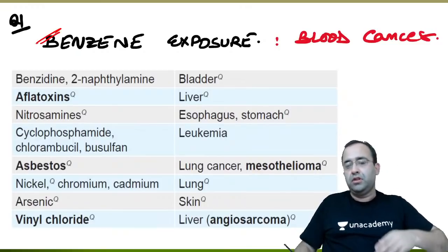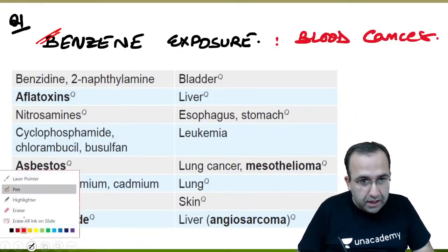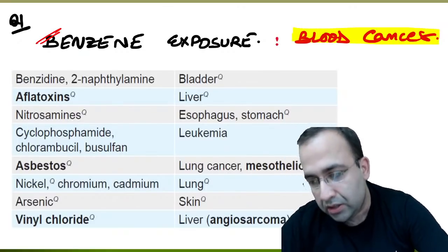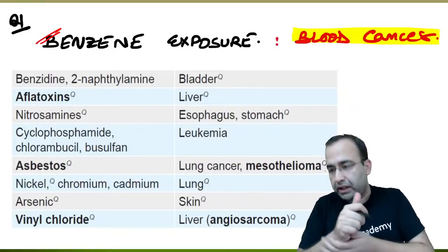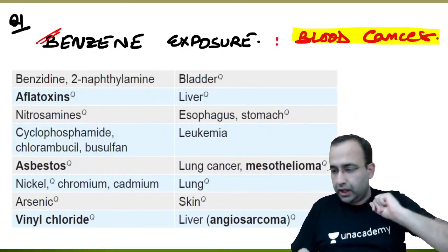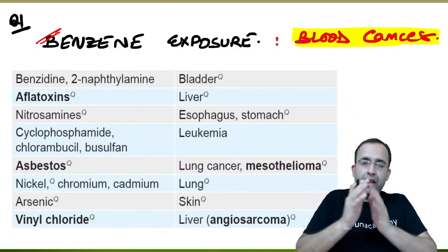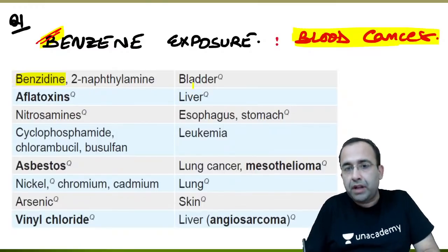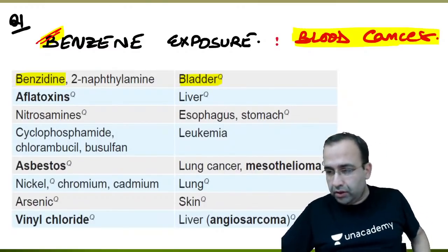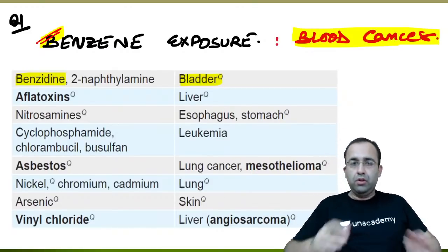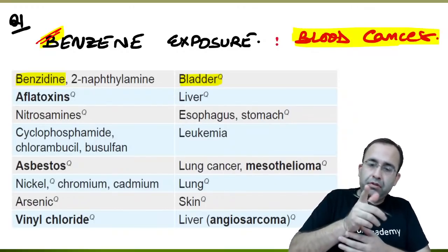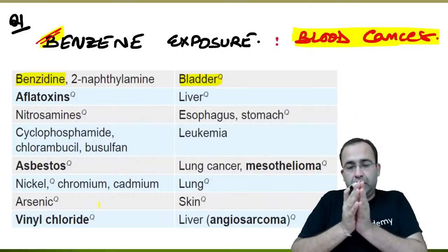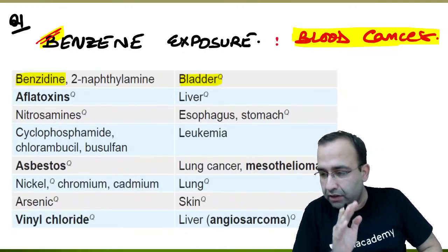First question: benzene exposure is associated with which blood cancer? Benzene exposure is most commonly associated with leukemias. Many students confused benzene with benzidine — benzidine and beta-naphthylamine are the ones associated with bladder cancer. Topics are repeated in previous NEET PG papers; there were about 22 pathology questions, 15-16 from repeat topics.